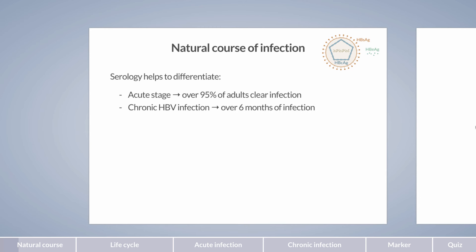The term chronic infection is associated with several phases. We'll give you an initial quick overview. Often, the first phase of chronic infection is the immune-active phase. In this phase, the patient has a high viral load, and there is moderate to severe inflammation in the liver.